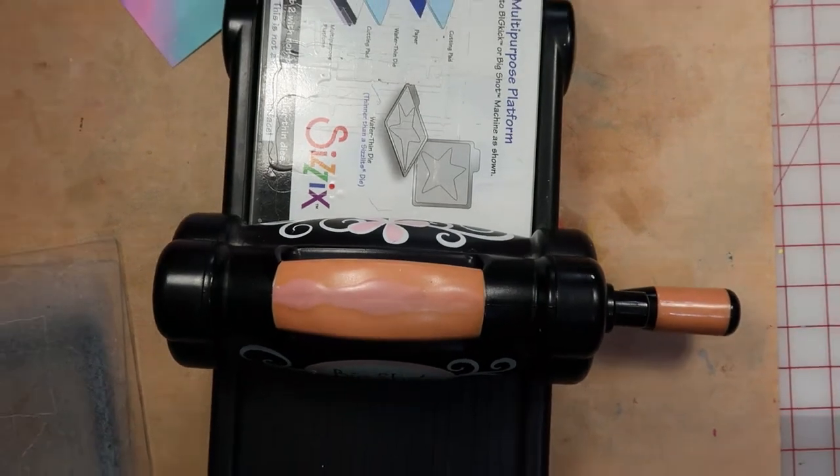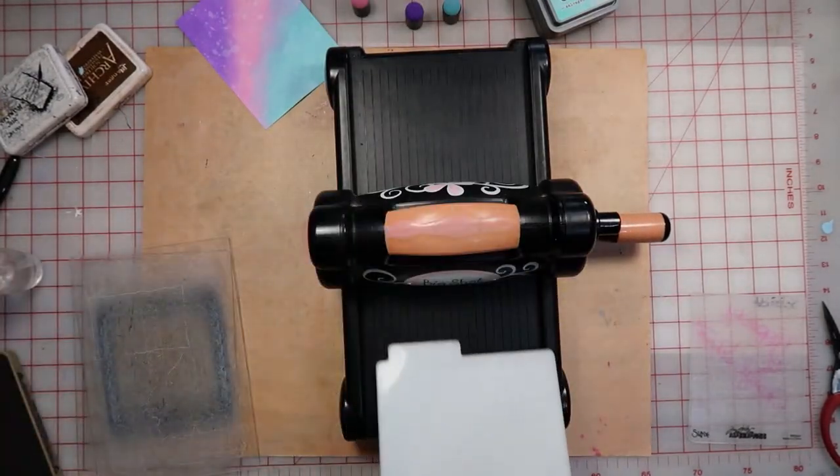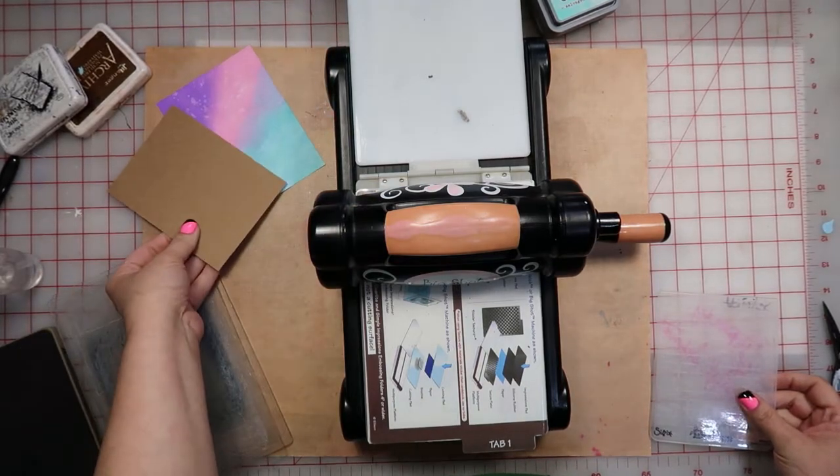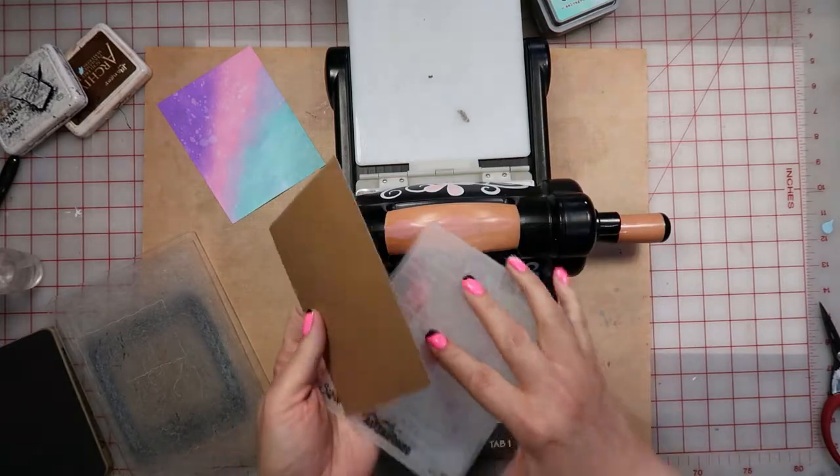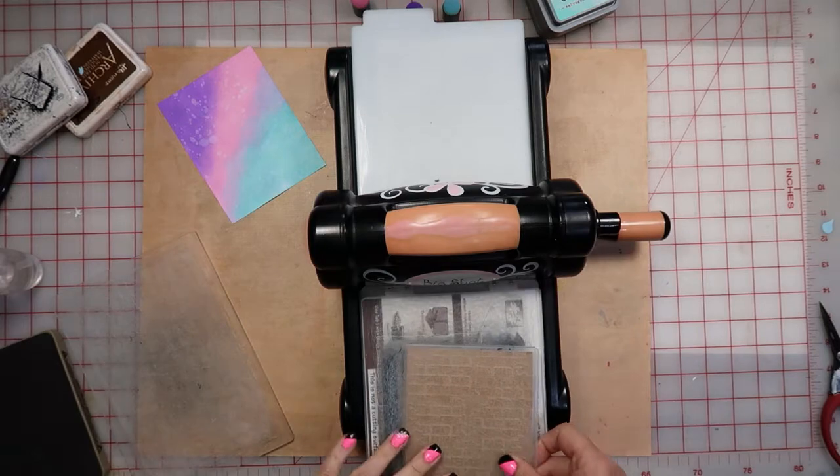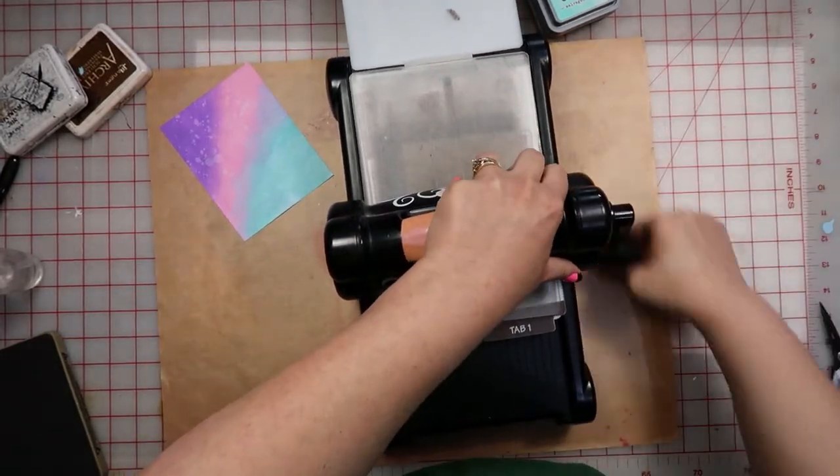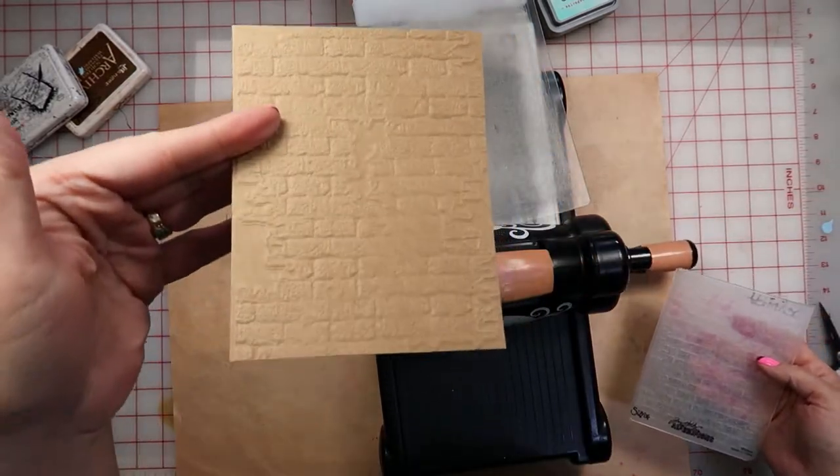All right, so I'm gonna let that dry for a second, and while that's drying I'm gonna pull my Big Shot in. I want to do a background for this card, so I think I really like the look of the craft against the bright colors of the oxide. I've got my Tim Holtz Alterations, it's the Brick Wall stencil, it's been around forever. I'm going to put my cardstock in there, make my sandwich, run it through, and I've got this great textured brick wall piece.